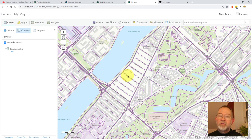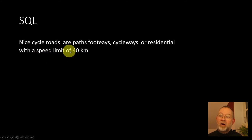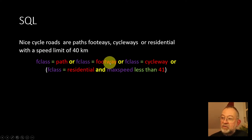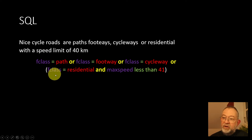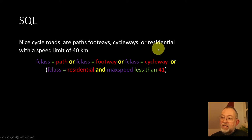I want to filter out those roads that match my concept of a nice cycle road: paths, footways, cycleways, or residential roads with a speed limit of 40 kilometers per hour. In SQL, this could be formulated as: feature class equals path, or feature class equals footway, or feature class equals cycleway, or — and here comes the interesting part — feature class equals residential AND max speed is less than 40. This is an example of SQL as it can be formulated in ArcGIS Online.